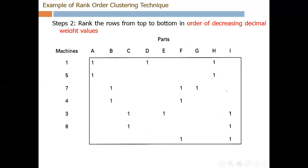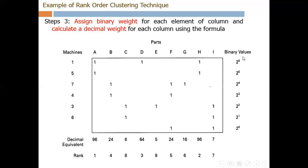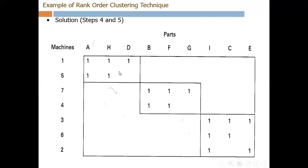Next we apply the same process to the columns. We assign binary values for each individual column element, calculate the decimal equivalents, and then provide ranks — the highest value gets rank 1. We then rearrange the matrix accordingly. Finally, after rearranging both rows and columns, the order of parts and machines is changed in such a way that parts which interact with the same machines are grouped together, forming part families. This is the purpose of the rank order clustering technique.